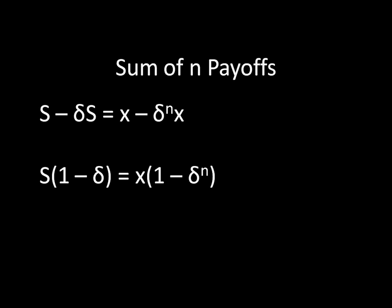We can undistribute on both sides of that equation. So we can pull out an S and have a 1 minus delta on the left side, and we can pull out an x on the right side and have a 1 minus delta to the n in parentheses on the right. And from here, we can very easily solve for S. Remember, S, again, is the sum of the first n payoffs. All we need to do is divide by 1 minus delta, and we get our solution. The sum of the first n payoffs equals x times 1 minus delta to the n divided by 1 minus delta.